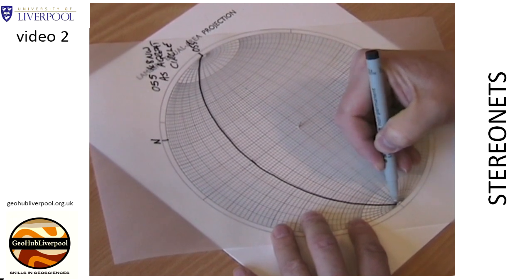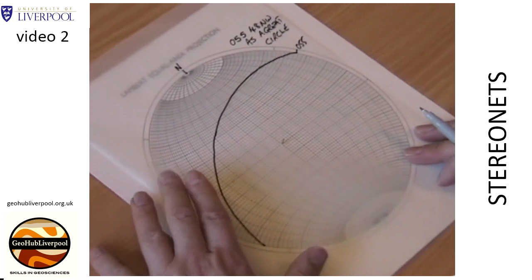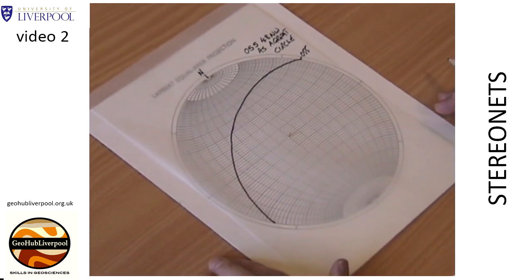Rotate the tracing paper so that the north pole is in its original position to see the stereogram that shows the plane plotted as a great circle.